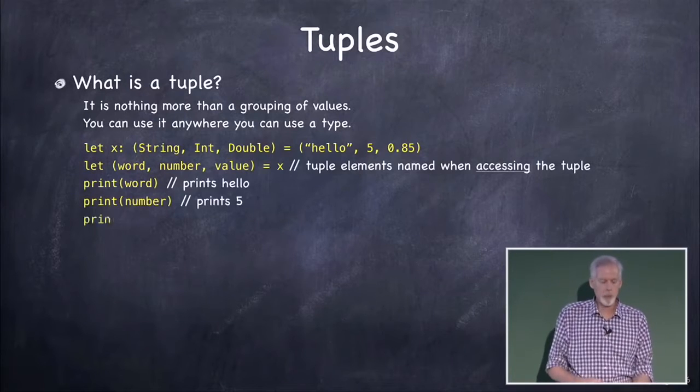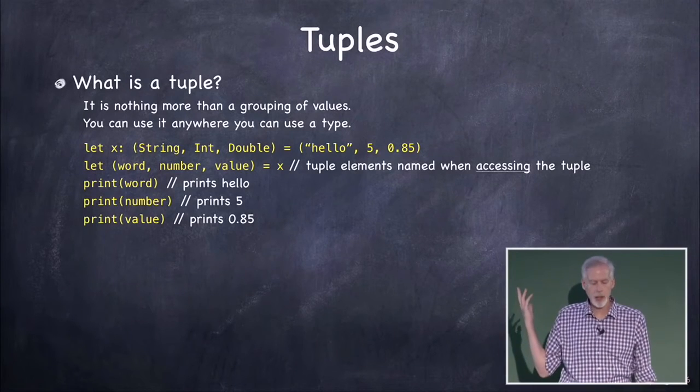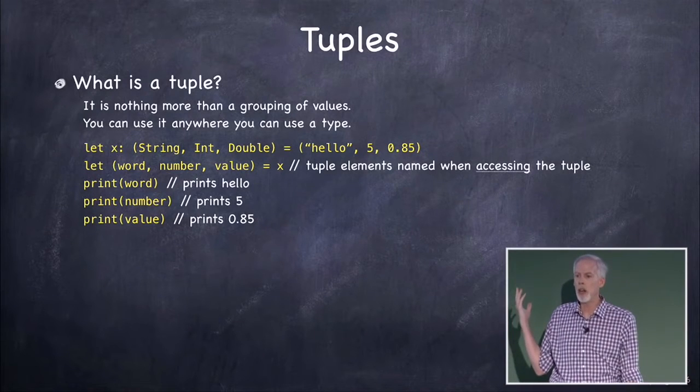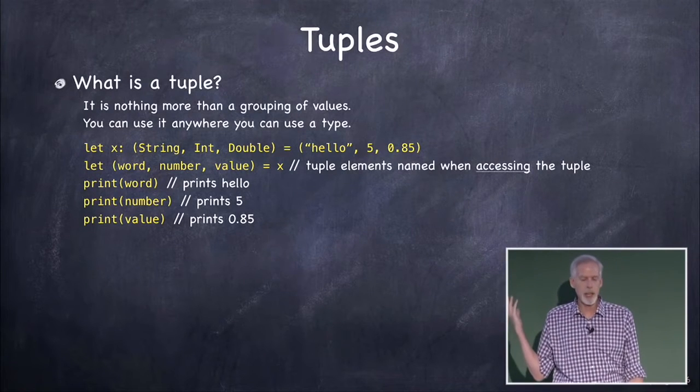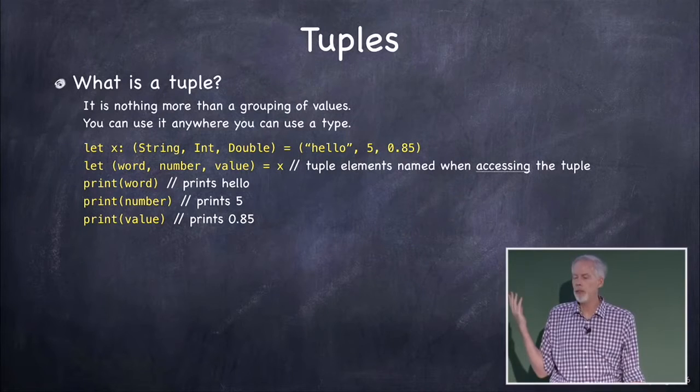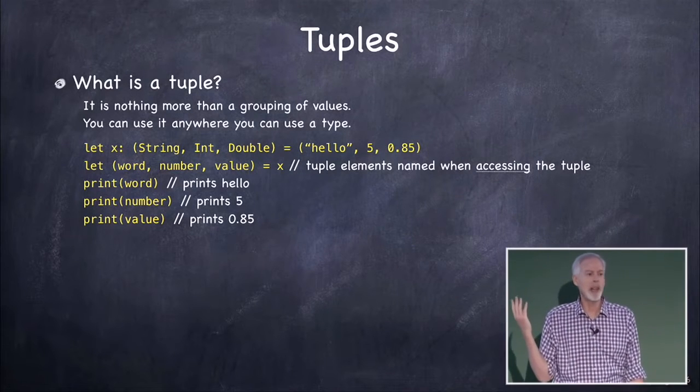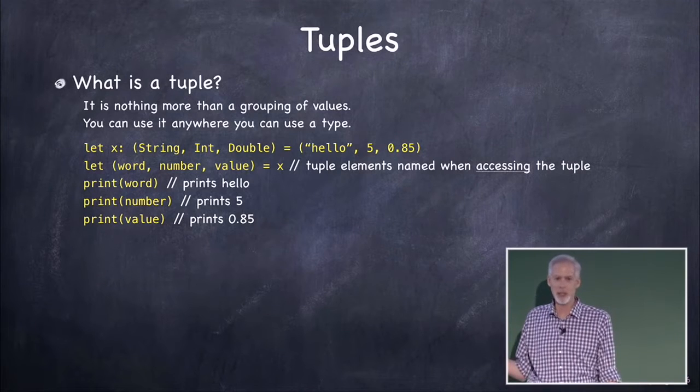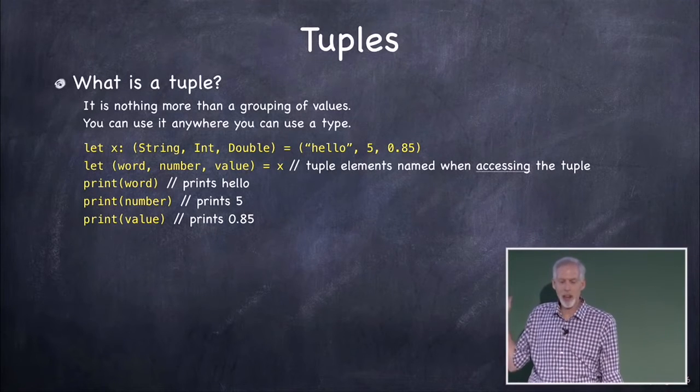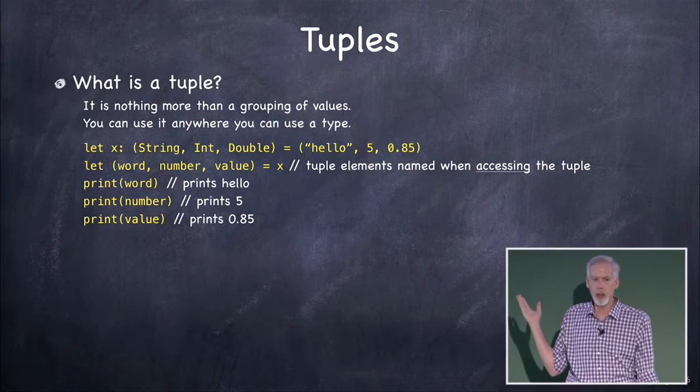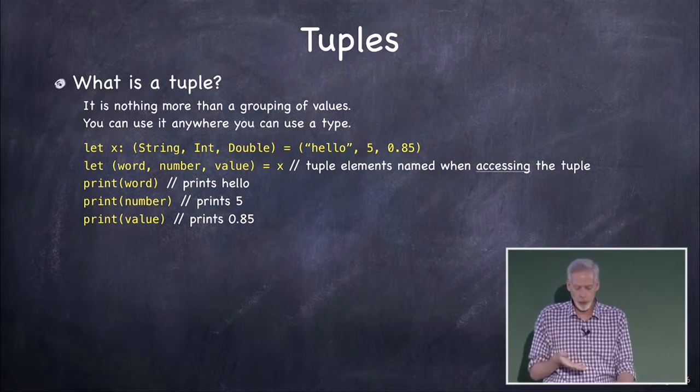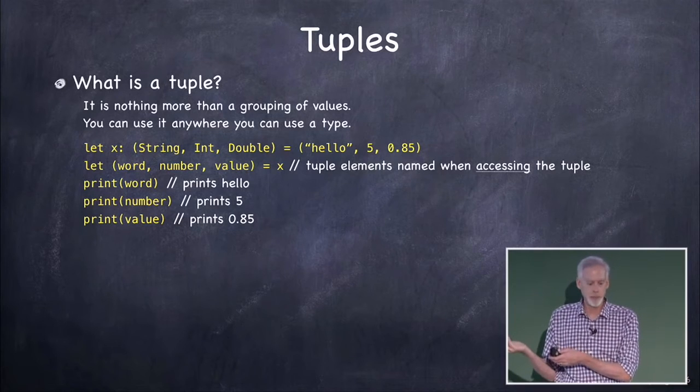So here's an example. I'm gonna create x. This let x, x is a constant, its type is a tuple with a string, int, and double. So even though tuple has the sound two in it, it's not just two things. Any number of things can be in a tuple. So x there is a tuple with string, int, and double. And I'm even setting it to a value, which is just parentheses, a string, an int, and a double.